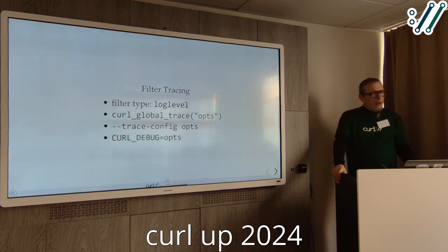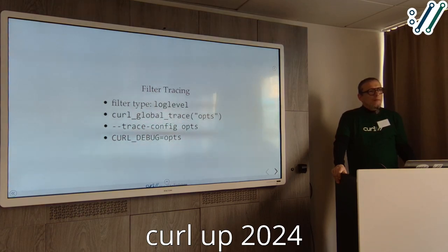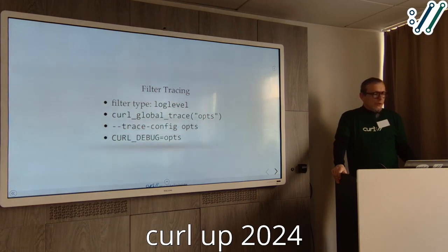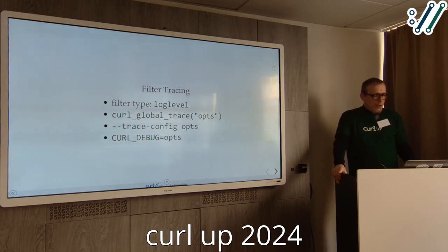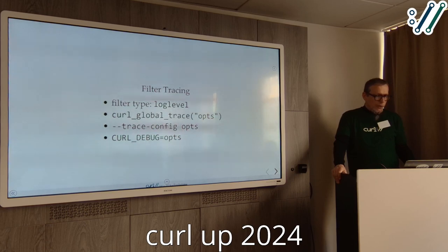You can turn on tracing either with a new libcurl method curl_easy_trace, where you specify filter names or other features to trace, or on the command line with --trace-config. In debug builds, you can also specify this via an environment variable, which is convenient for testing — like running a test case with tracing on SSL and HTTP/2.